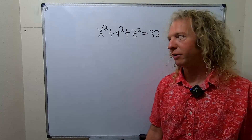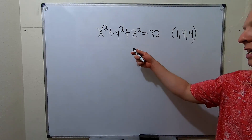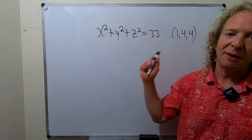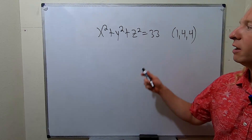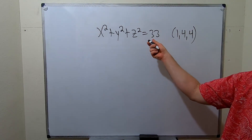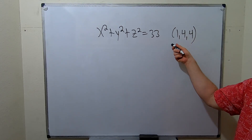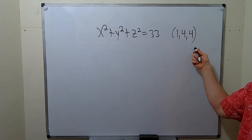In this video, we're going to find the equation of the tangent plane and the normal line to the graph of the sphere at the point (1, 4, 4).